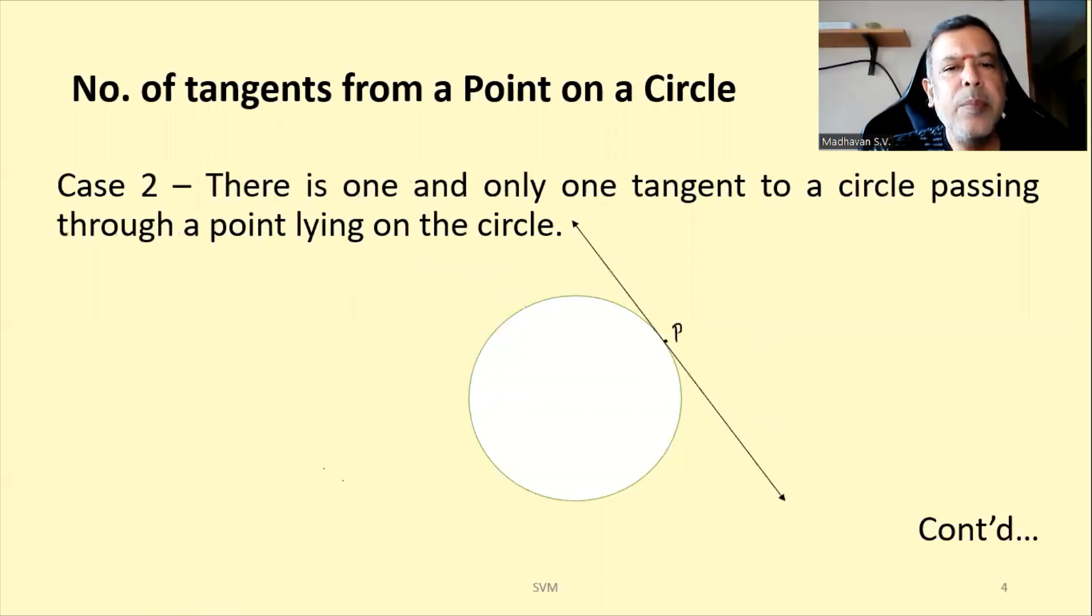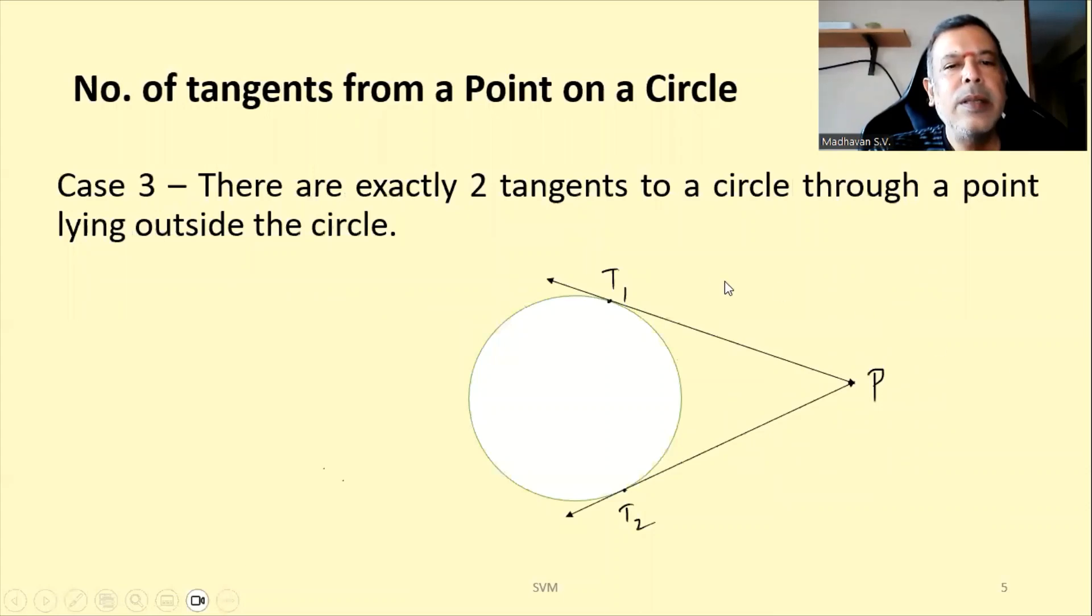Now, if I put one point on the circle, then there is only one tangent possible, that is very clearly visible. If I put two points on the circle, like here T1 and T2, then there are exactly two tangents to a circle from a point outside the circle. From here, if I draw, there are only two tangents possible.